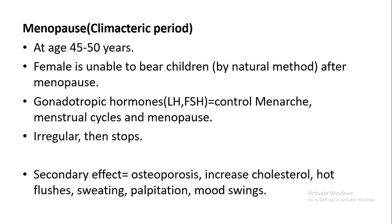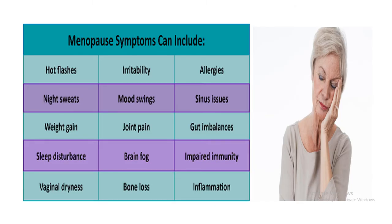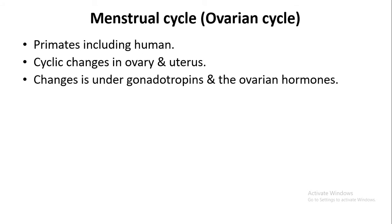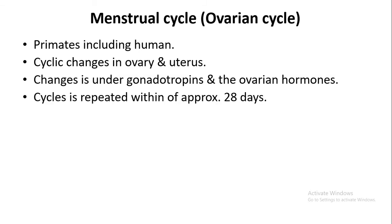There are some other symptoms present in females during menopause. Now let's talk about the menstrual cycle, also called the ovarian cycle. This is a characteristic feature of primates such as monkeys, apes, and humans. It involves cyclic changes in the ovary and uterus due to gonadotropic hormones — follicle stimulating hormone and luteinizing hormone — and ovarian hormones such as estrogen and progesterone. This cycle is repeated within approximately 28 days.